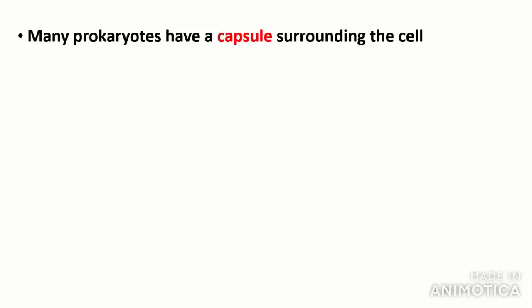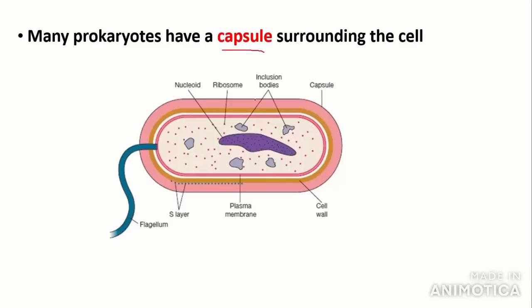Many prokaryotes also have a capsule surrounding the cell. The main function of the capsule is to provide attachment functions and protection from phagocytosis, and also to allow entry to host cells. This is why we often associate capsules with a virulence factor — the thing that makes the bacterial or viral organism infectious.